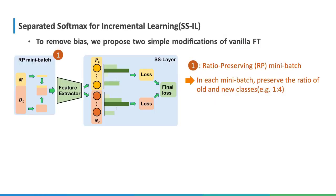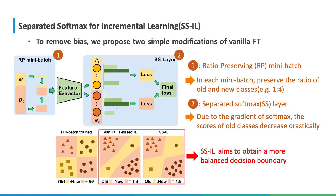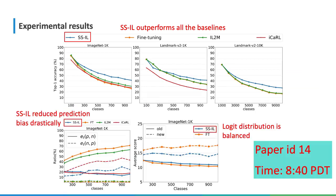In our work, we propose two simple modifications. The first is ratio-preserving minibatch, which preserves the ratio of old and new classes. The second is a separated softmax layer, which separates the softmax based on old and new classes. By using these two modifications, we aim to obtain a more balanced decision boundary. We carry out extensive experiments on large-scale datasets, and our work outperforms other baselines. Furthermore, our approach reduces prediction bias, and the logit distribution on the output layer is more balanced. Please visit poster number 14 at 8:40. Thank you.